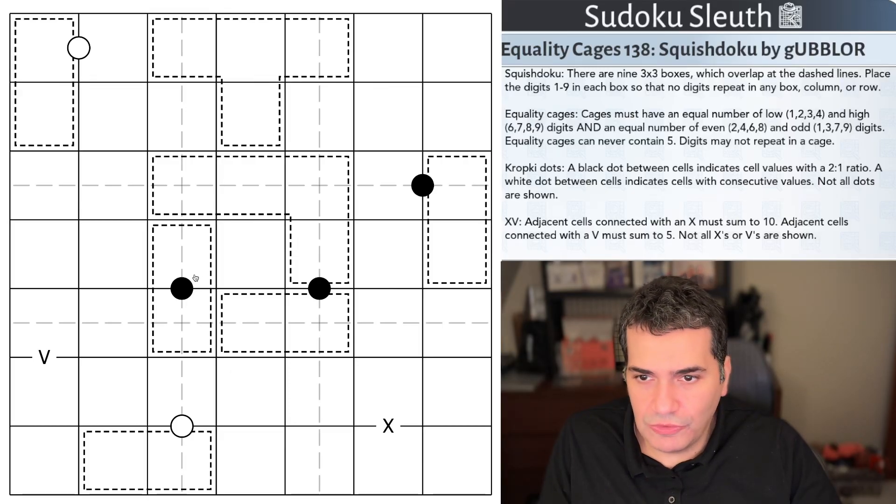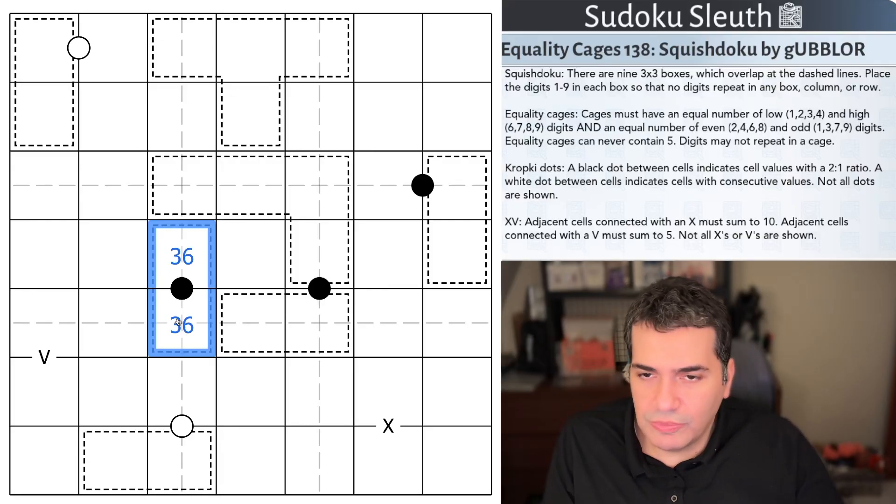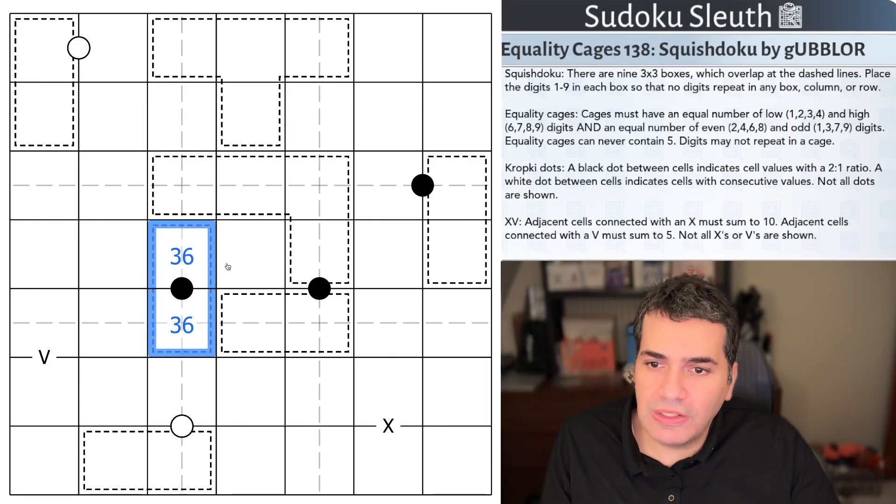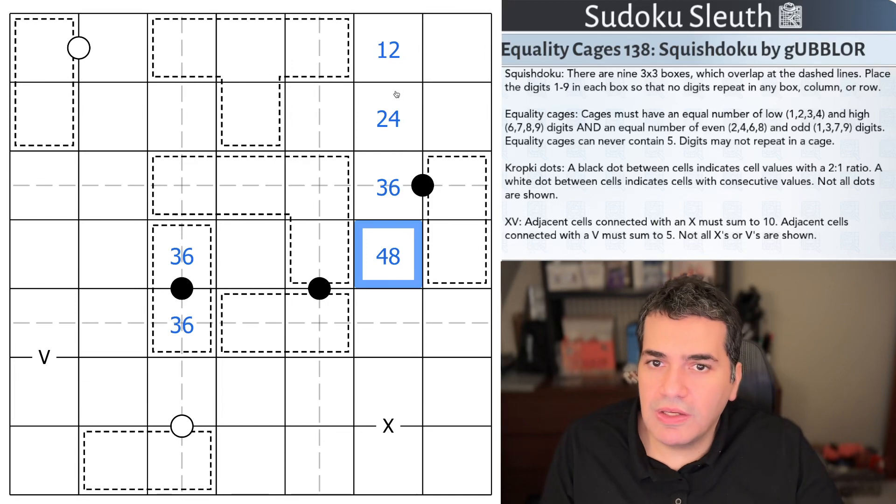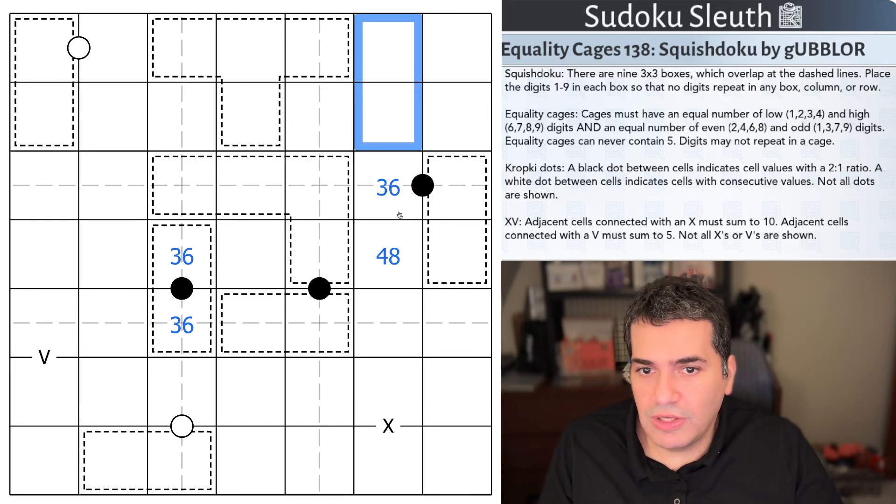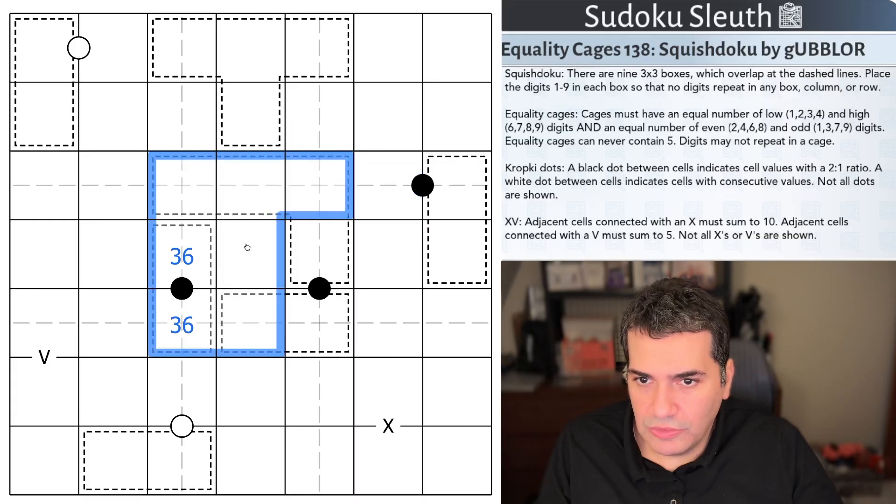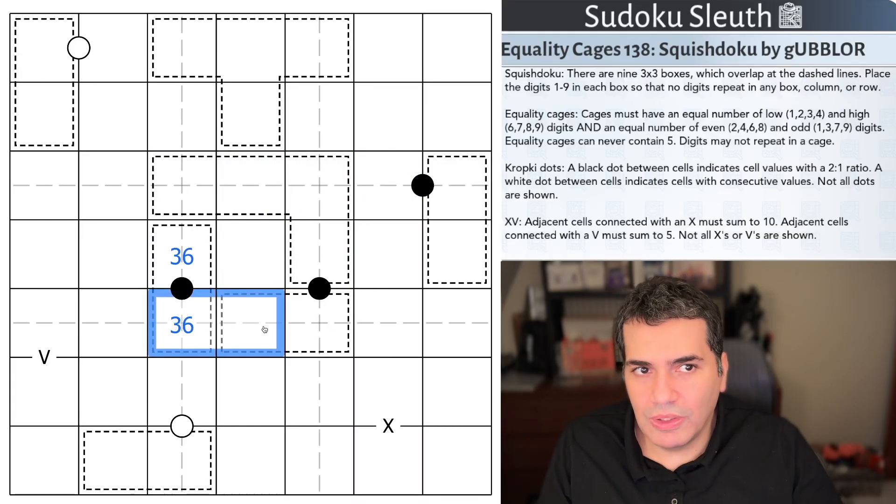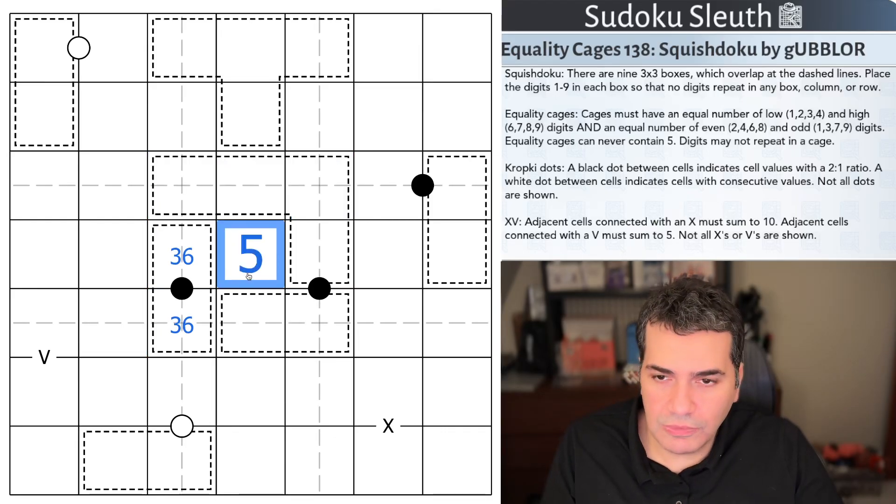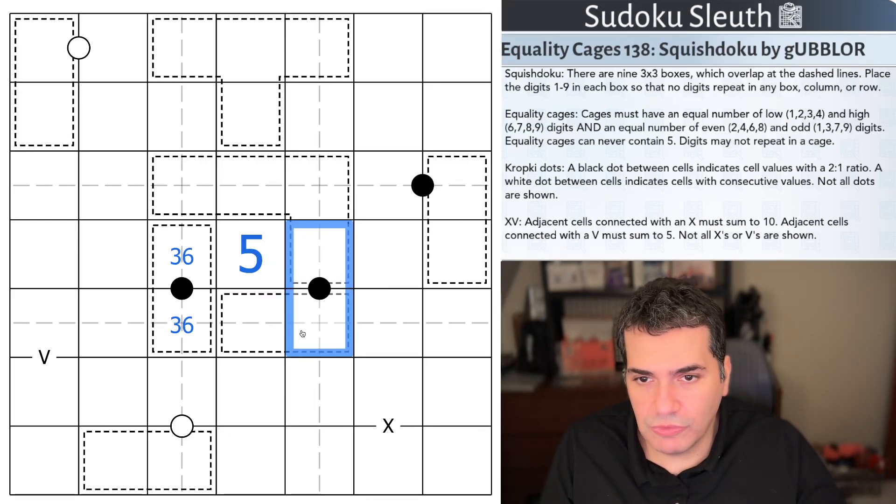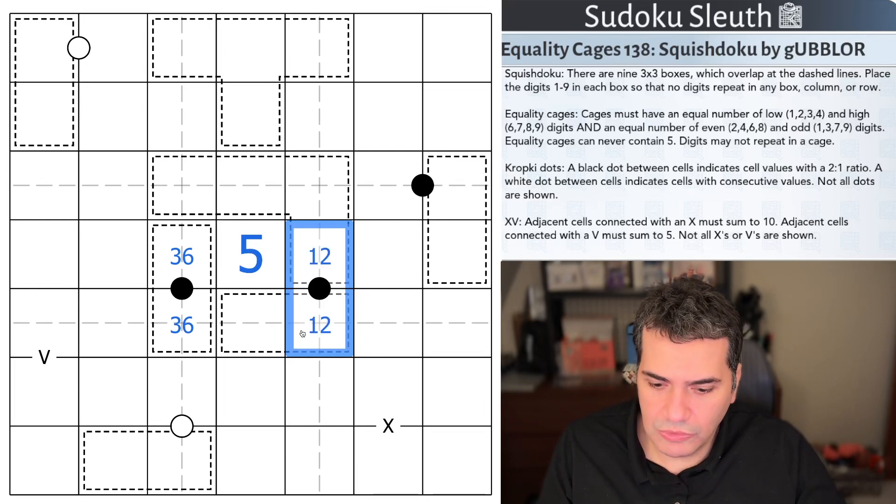If you've played enough equality cages, you spot these very easily. This is a 3-6 pair. The only way for a 2-cell equality cage with a black dot in it to be valid is 3 and 6. If you remember the pairs of black kropki dots: 1 and 2, 2 and 4, 3 and 6, 4 and 8. Need to have a low digit and a high digit, so 1, 2 and 2, 4 doesn't work. Need to have an odd digit and an even digit, so 2 even digits doesn't work. 3-6 is the only way.